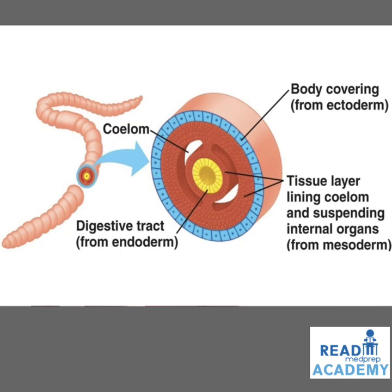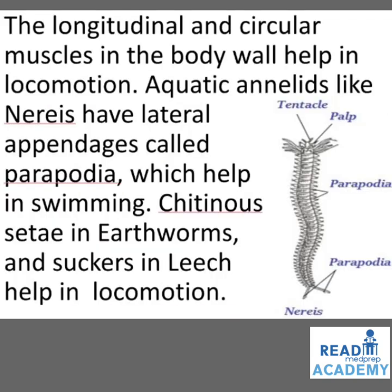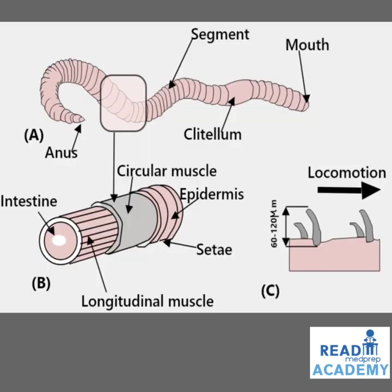Internally, the segments are divided from one another by partitions called septae — this phenomenon is known as metamerism. The body covering is made up of ectoderm, the endoderm surrounds the digestive tract, and the mesoderm is the tissue layer lining the coelom and suspending internal organs. The longitudinal and circular muscles in the body wall help in locomotion. Aquatic annelids like Nereis have lateral appendages called parapodia which help in swimming. You can see the image of Nereis showing tentacles, the palp, and the parapodia.